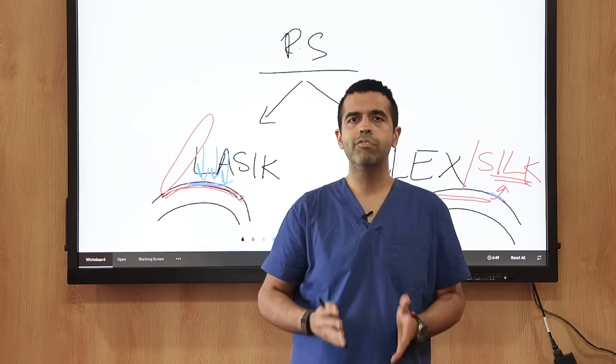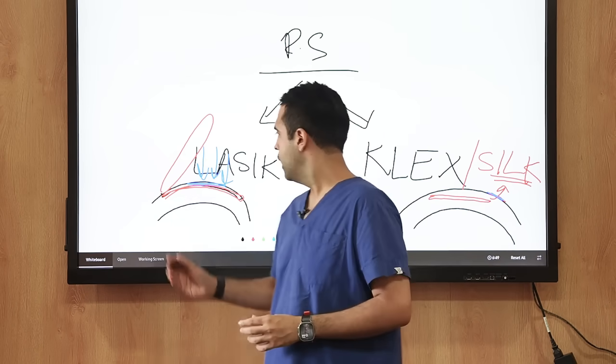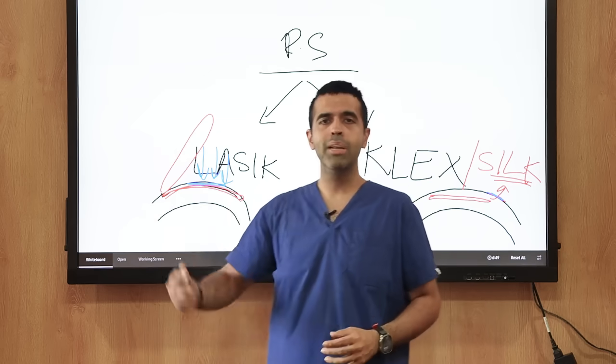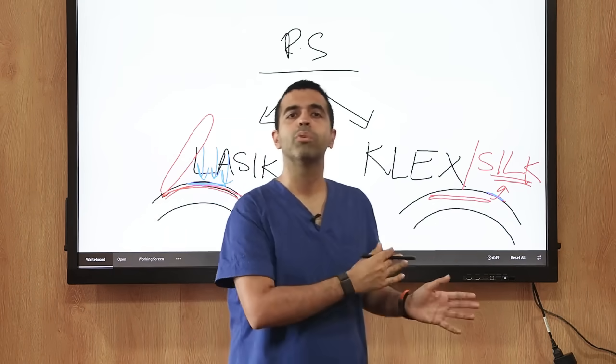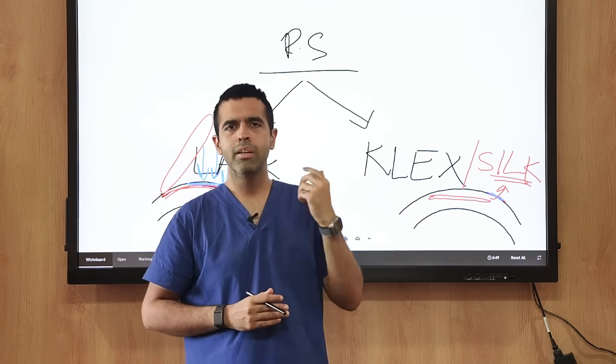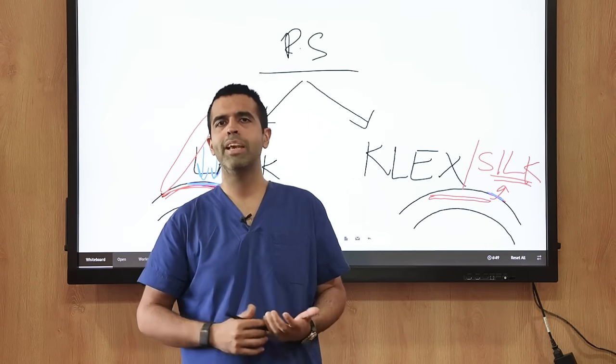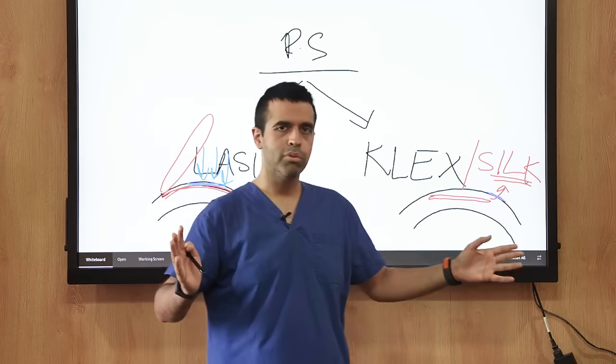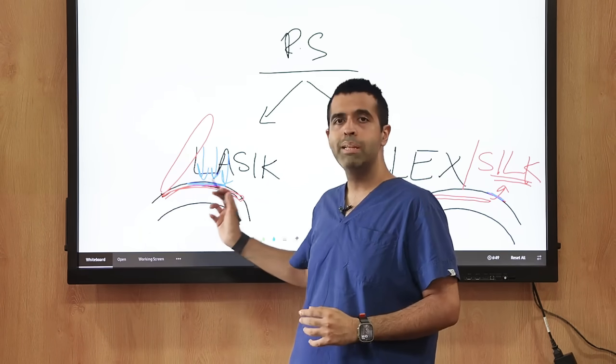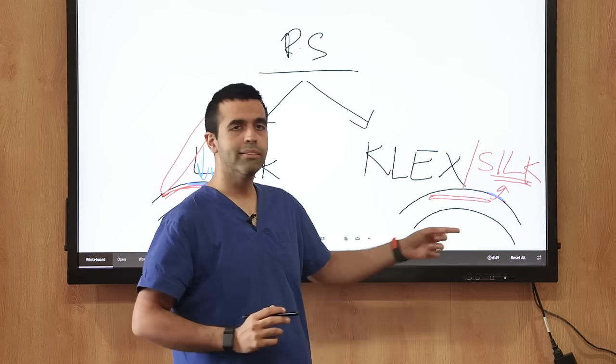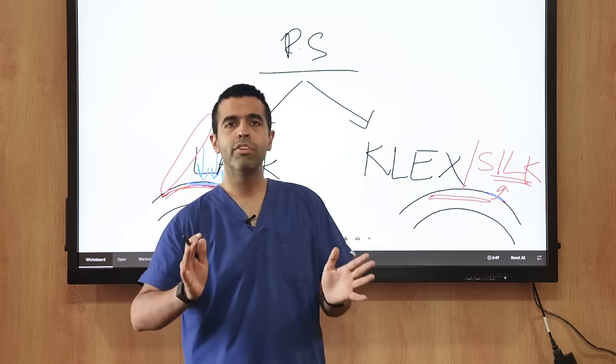In earlier days when we had open abdomen surgery, a big cut was made on the abdomen and the gallbladder was removed. But now in the modern world, we have laparoscopic surgery where through a small port of three millimeters the gallbladder can be removed. Similarly, we can compare LASIK and SILK, where the laser cut is 22 millimeters while the cut in SILK is 3 millimeters—seventeen times larger in the LASIK procedure.